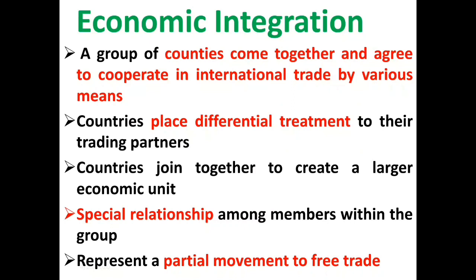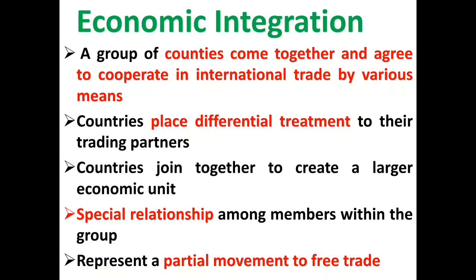Let us analyze the various levels or forms of economic integration. We have at least five forms: the preferential trade area, the free trade area, customs union, common market, and economic union. When members of an economic union adopt a common currency, the economic union can become a monetary union as well.